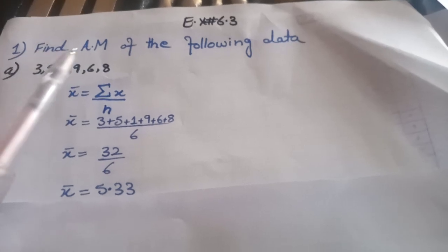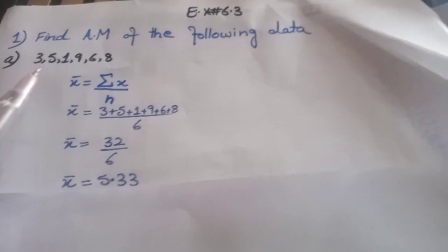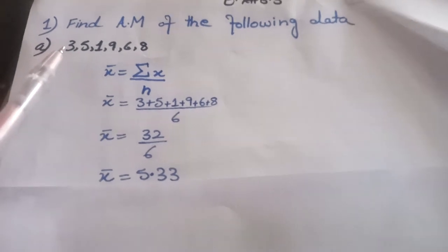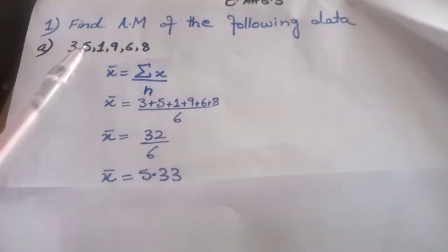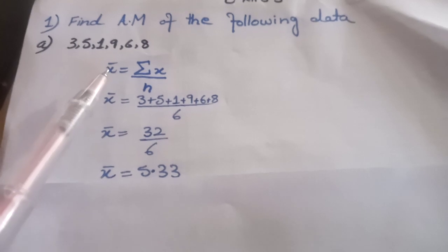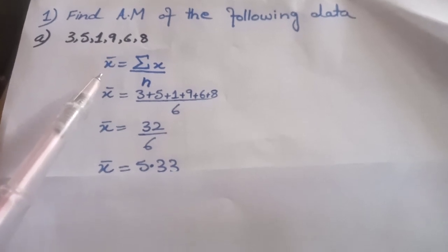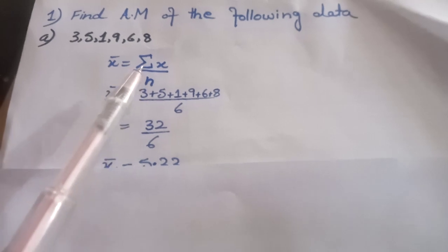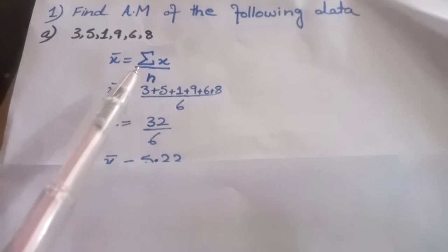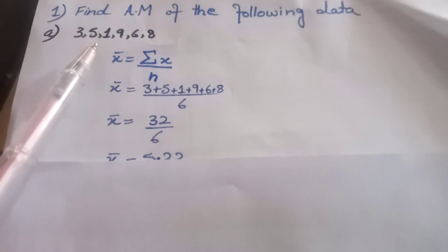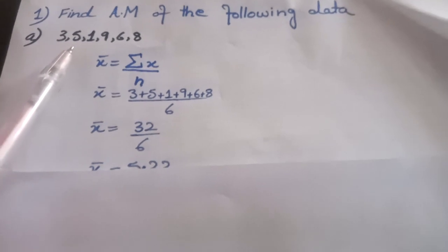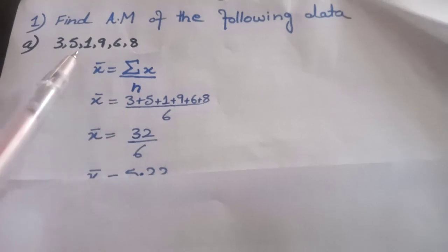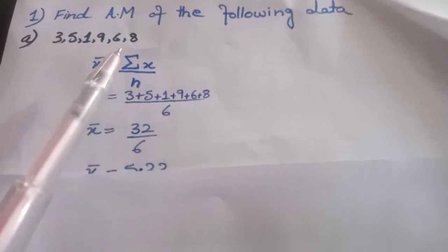Question number one. Find arithmetic mean of the following data. We have given ungrouped data. For ungrouped data, the arithmetic mean formula is X̄ equals summation X divided by N. Here, summation represents the sum of given observations, and N is the total number of observations.